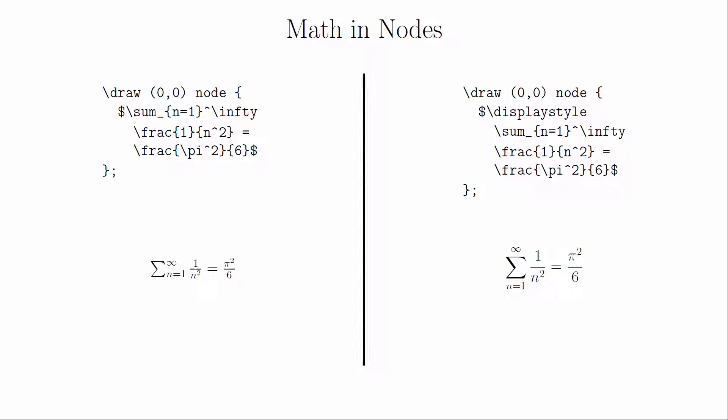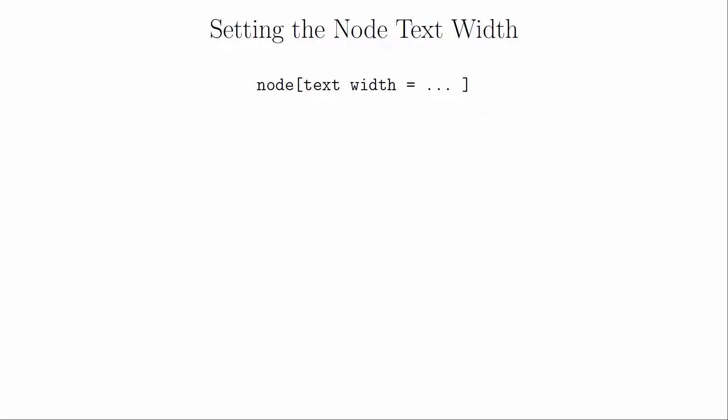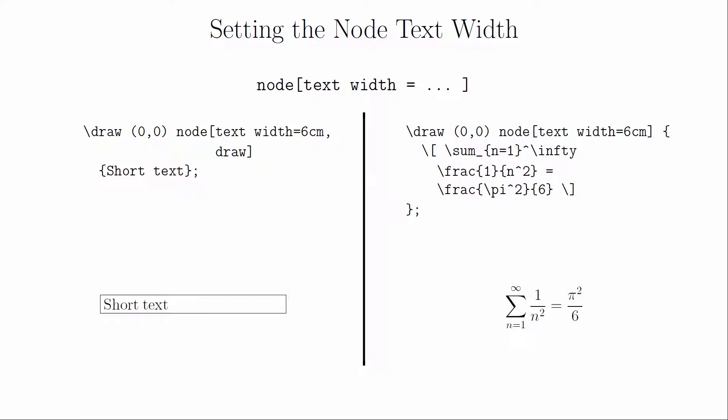And the default behavior for nodes is to stretch to fit its contents. You can actually declare the width of a node as an optional argument. The default behavior is that the text will be left justified. If you do this, you can actually create enough of a page-like environment that display style math mode work properly.